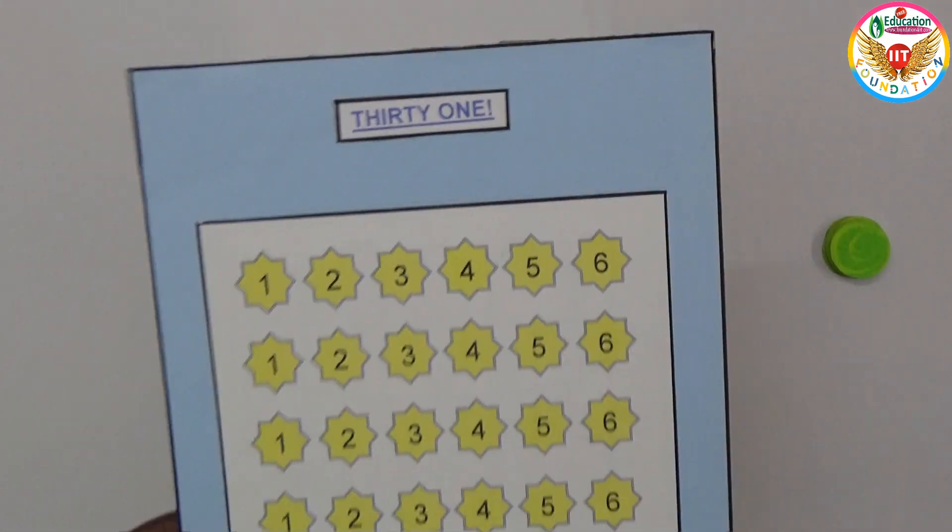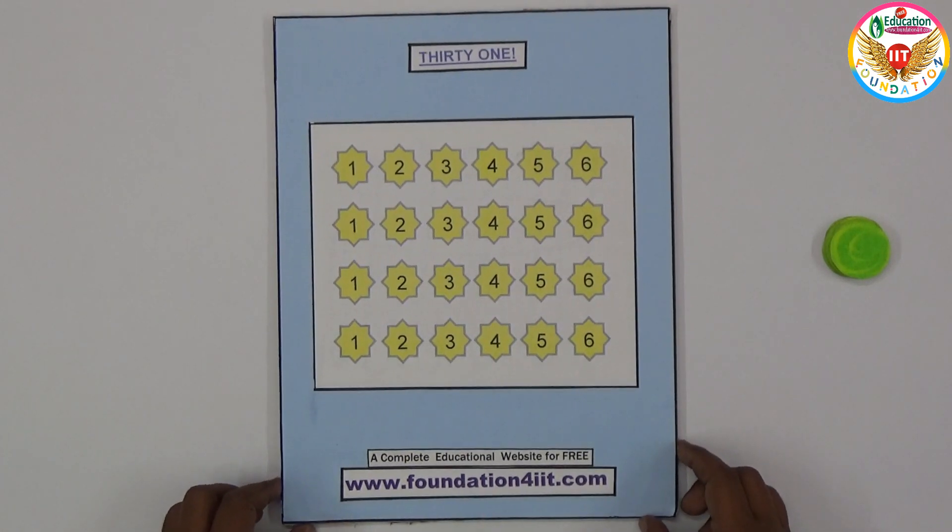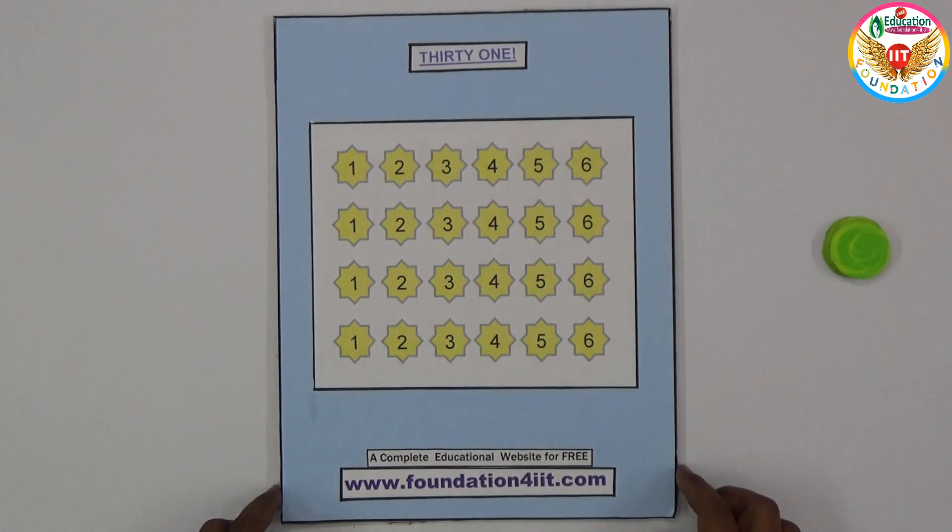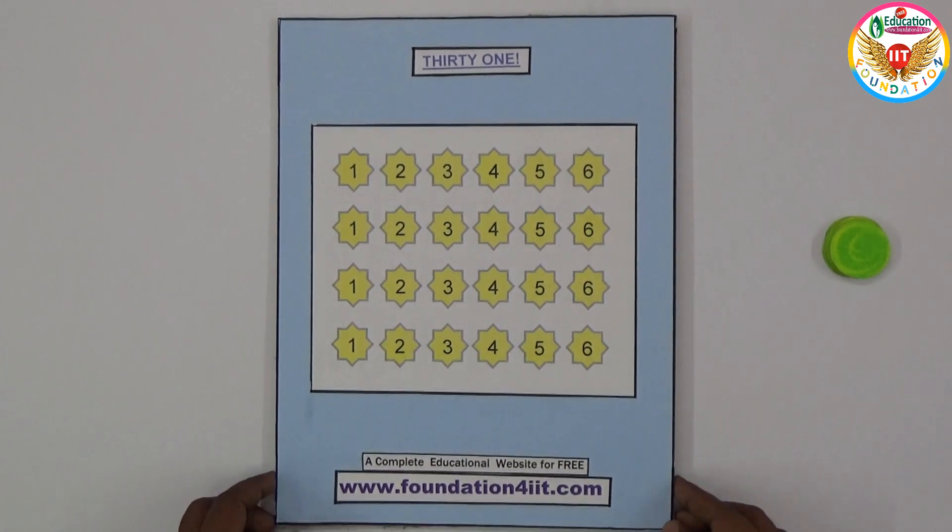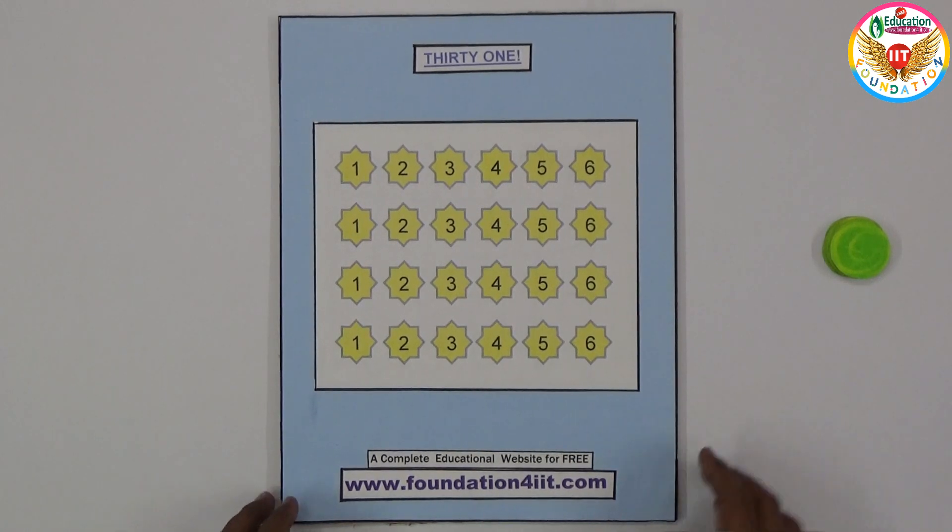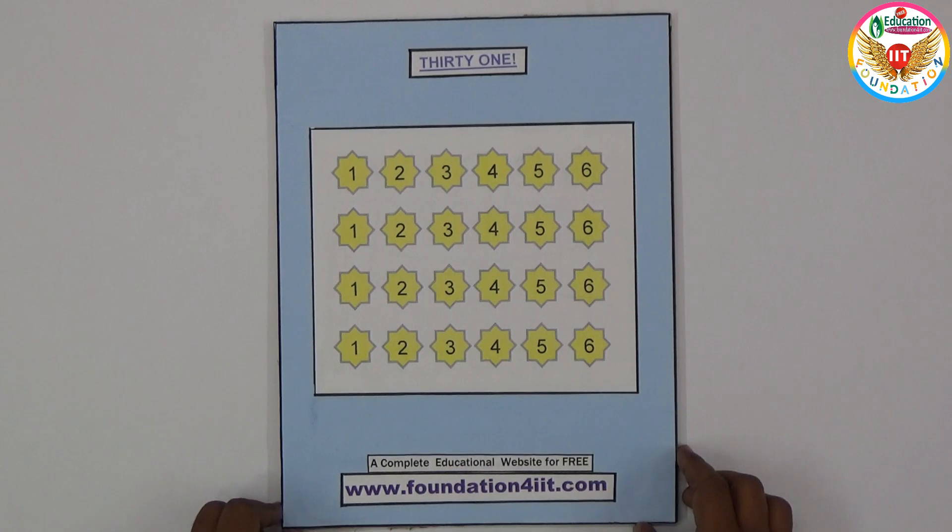This game is called 31. Two players can play at the same time using the concept of addition. If you are new to this channel, just subscribe to get videos and notifications instantly. Now let us see how to use this project and how to play with two players.